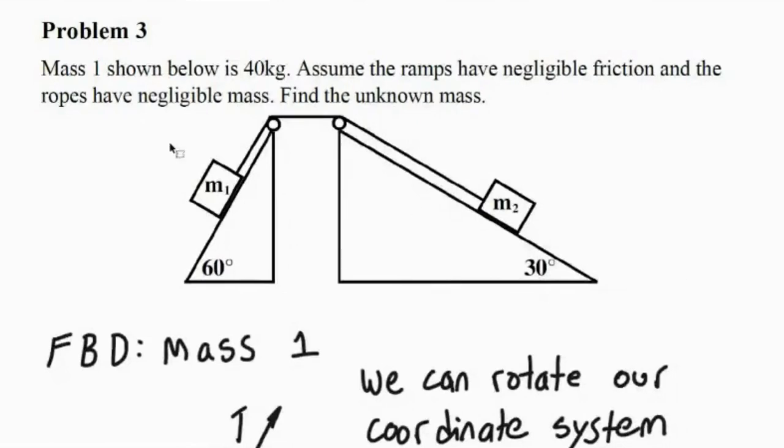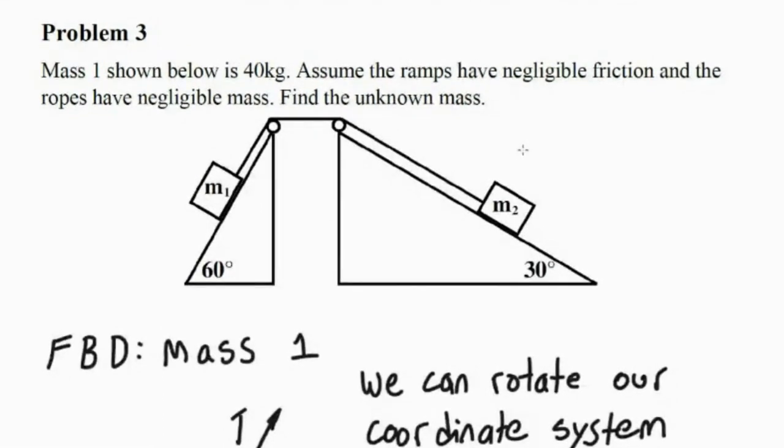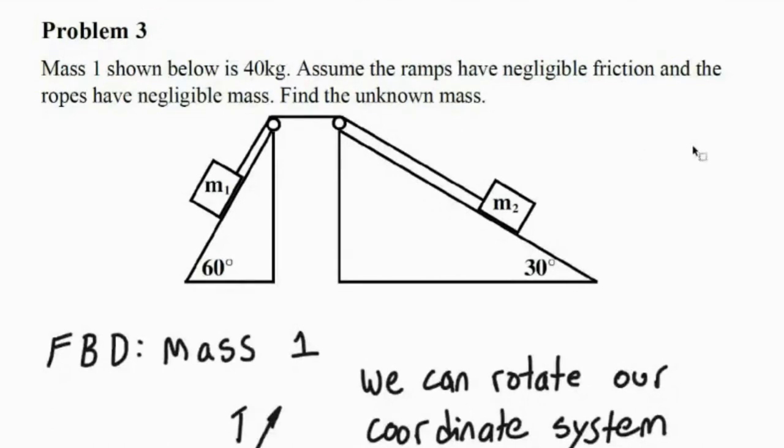So in this problem, they give us the value for mass 1, and they want us to figure out what the value for mass 2 is. They also give us some assumptions. They say, assume the ramps have negligible friction, and we can ignore the mass of the ropes.